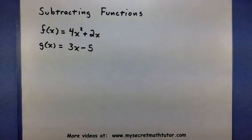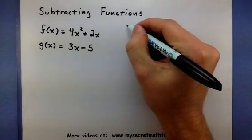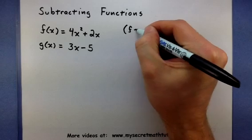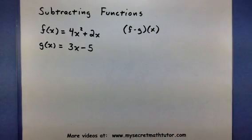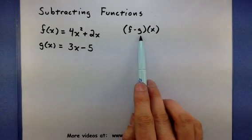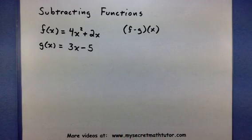The notation for subtracting functions looks a little bit like this. Basically, what this says is to take f and subtract g and use an input of x.